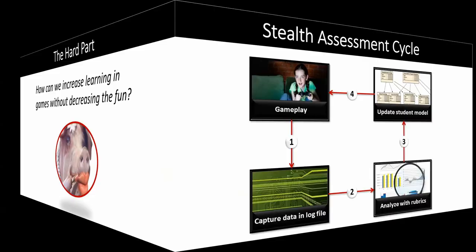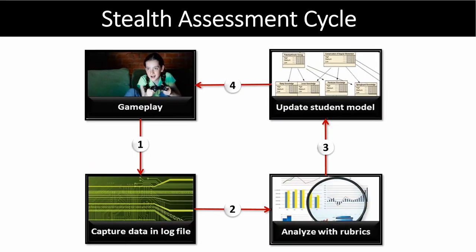This is the classic flowchart for the stealth assessment cycle. Kids are playing a game and producing all sorts of performance data, which is captured in a log file and automatically analyzed by the stealth assessment machinery using in-game rubrics. The results are output to a student model at any time in any grain size. Those current estimates about competency levels can then provide feedback and support in real time to the player during gameplay, and the cycle continues as they play more levels and more data are captured.